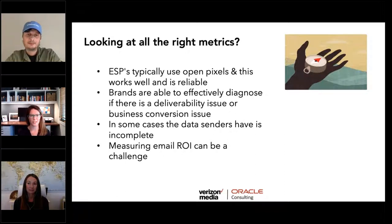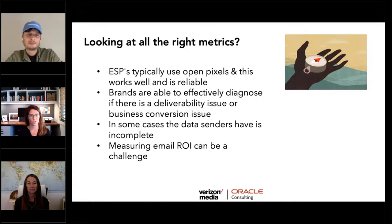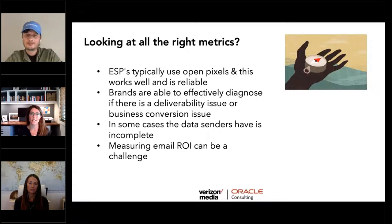Traditionally, ESPs have looked at open pixels — it works well and is reliable. Brands are able to effectively diagnose a deliverability or business conversion issue based on that open pixel. There are questions raised about the difference between ESP engagement rates and ISP rates. The sender's unique open rates by ISP by day is hugely powerful. When open rates are less than two to three percent at any given ISP, that typically means there's sustained widespread junk foldering going on.